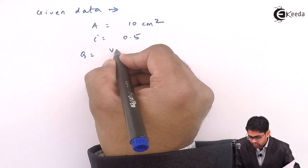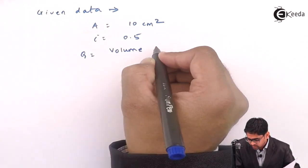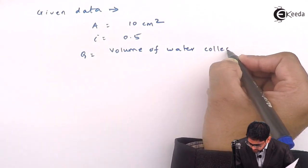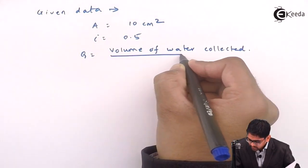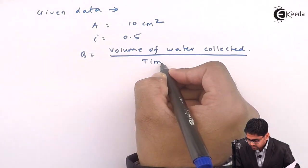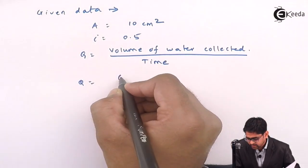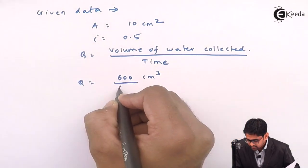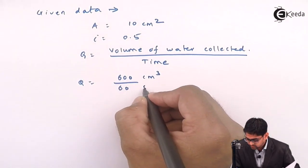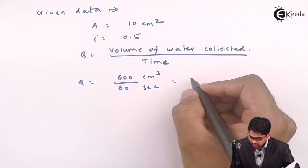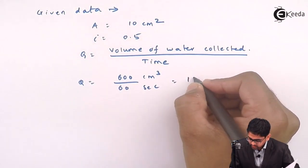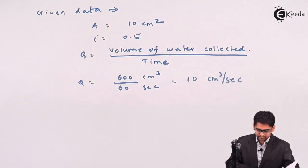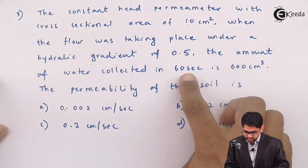The Q is nothing but volume of water collected divided by the time. So volume of water collected is 600 cm³ and the time is 60 seconds. So we will get the Q equals to 10 cm³ per second from this particular data.